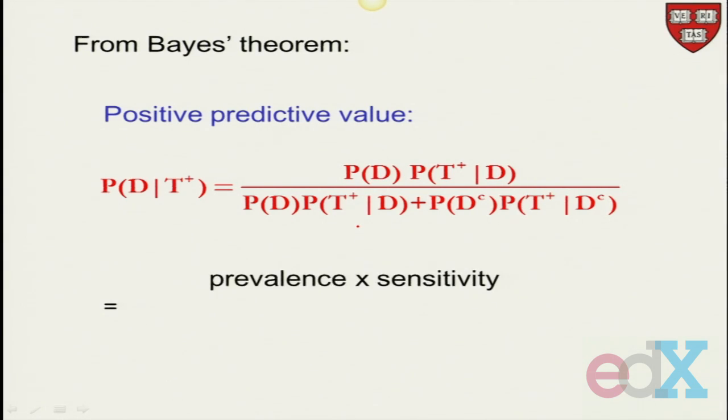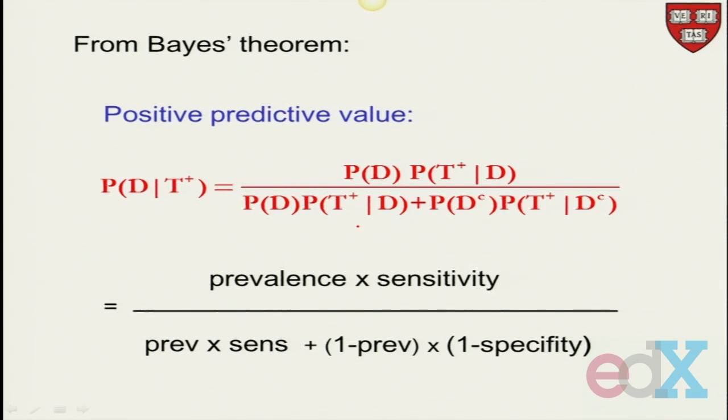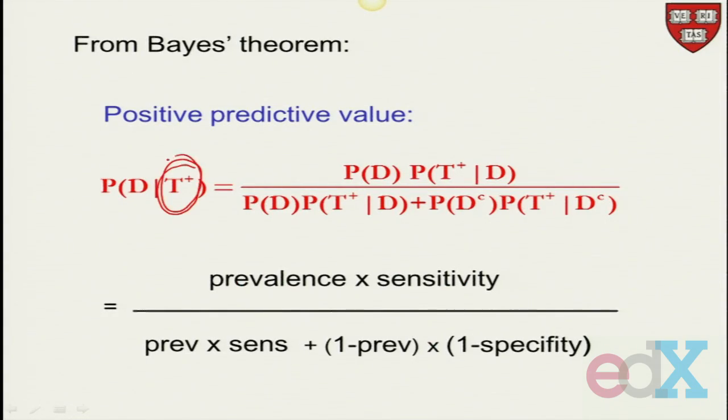And if you look and go back to the two previous slides, we see that the positive predictive value is the prevalence times the sensitivity divided by the same thing, prevalence times sensitivity, plus one minus the prevalence times one minus the specificity. So that's what Bayes' theorem tells us. Bayes' theorem allows us to evaluate what's the value of a positive test. Given that we took this diagnostic test, what's the probability of having the disease?